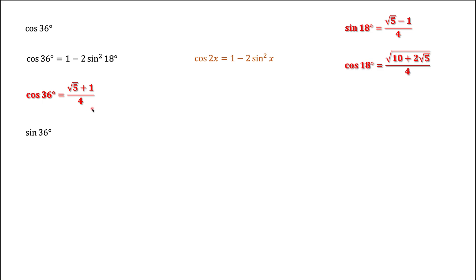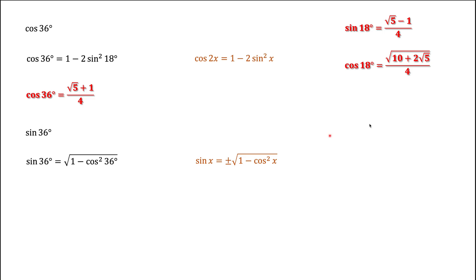We can calculate sine of 36 degrees in several ways. One way is to use the double angle formula for sine and express sine of 36 degrees via sine of 18 degrees and cosine of 18 degrees. Another way is to express sine via cosine of 36 degrees using the Pythagorean identity. Since 36 degrees is in the first quadrant, sine of 36 degrees is positive, so we choose the plus sign. Plugging in the formula for cosine of 36 degrees gives the final answer.